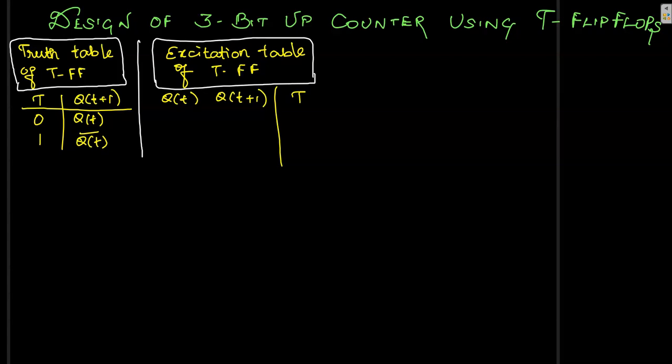The truth table of the T flip-flop states that the output will be the same state if T is given an input of 0. The output will be the complement of the previous state if the input to the T flip-flop is 1. Based on this truth table, we can derive the excitation table. The requirement is: if the previous state is 0 and we want the same state as the next state, then the input to be given is 0 — we do not want to change the state.